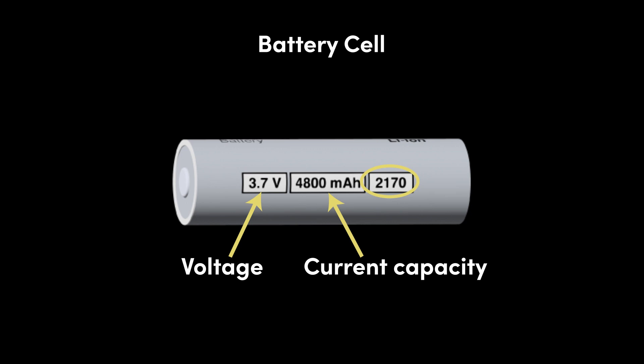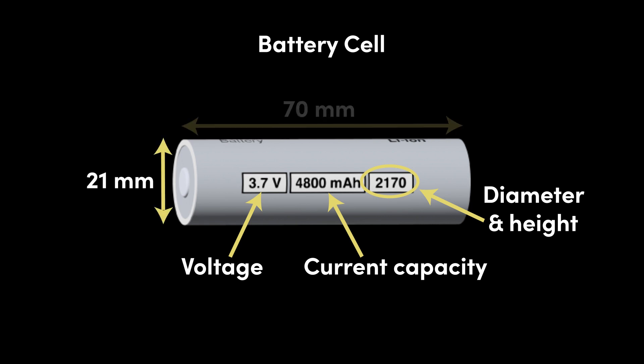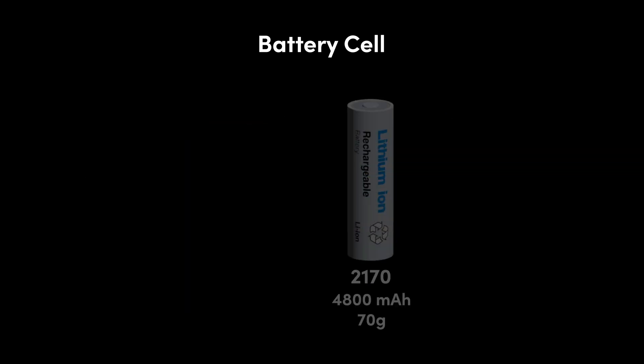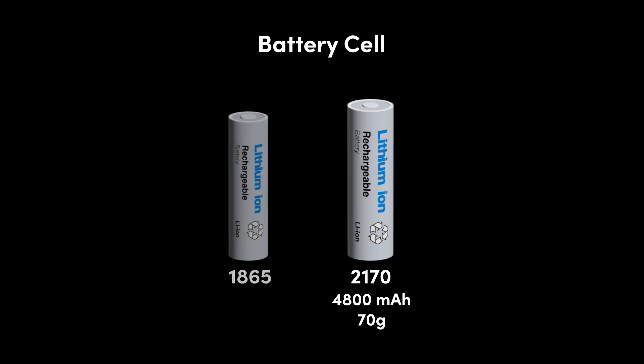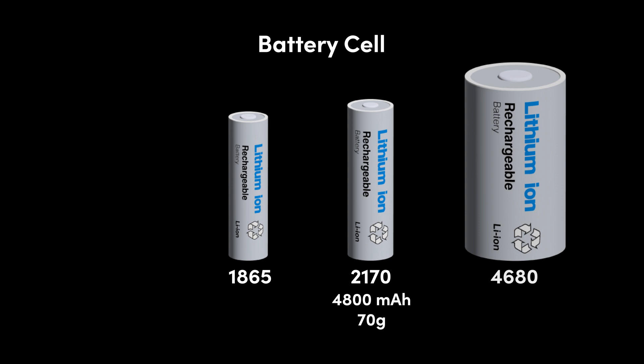In this case 2170, which refers to the diameter and height in millimeters of the cell: 21 millimeter diameter and 70 millimeter height. This number, 2170, is often used as the reference for the type of battery cell. Other lithium-ion battery cells are the 1865 and 4680, which are physically smaller and larger respectively, and have smaller and larger current capacities respectively.